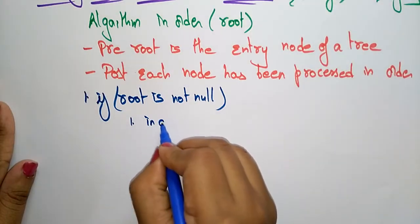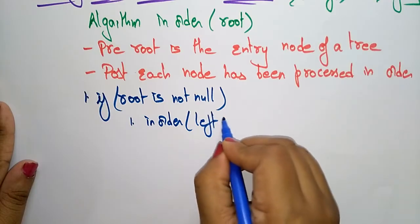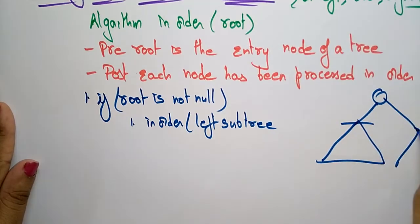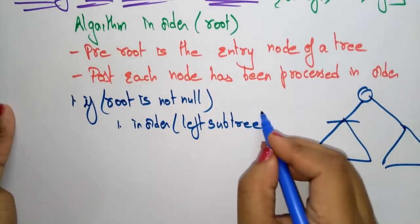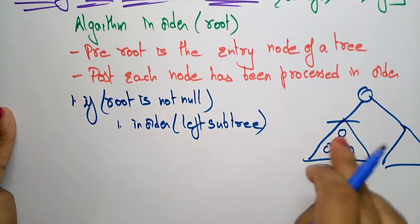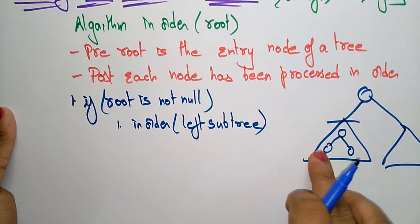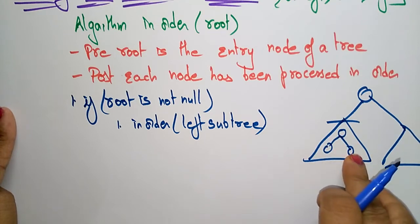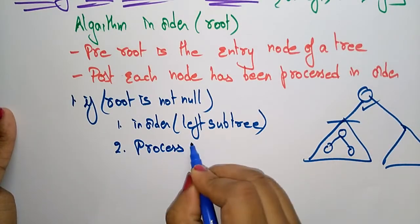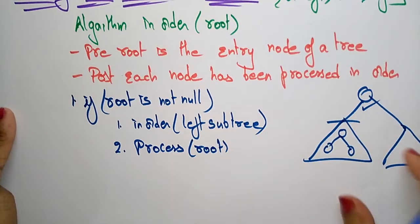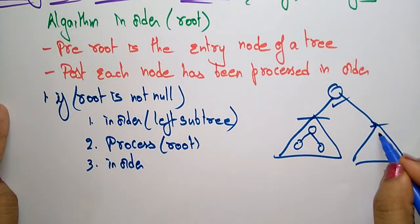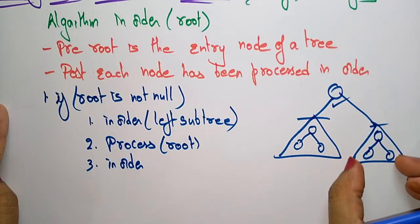If nodes are present in the tree, first you apply in-order on the left subtree — whatever subtree is present on the left side, you follow the in-order technique: visit left node, then root node, then right node. Next, you process the main root. Then come to the right subtree and follow the in-order technique again on whatever nodes are present there.